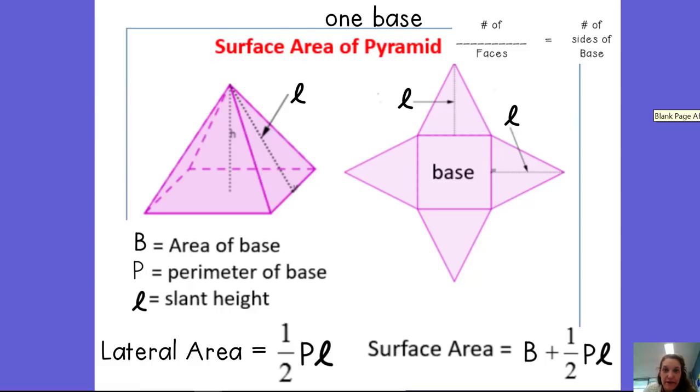A pyramid is a three-dimensional figure that has one base and its lateral faces are all triangles. So this pyramid, if you folded it flat, would have that square base. And then if you unfolded those lateral faces, it would be four different triangles.